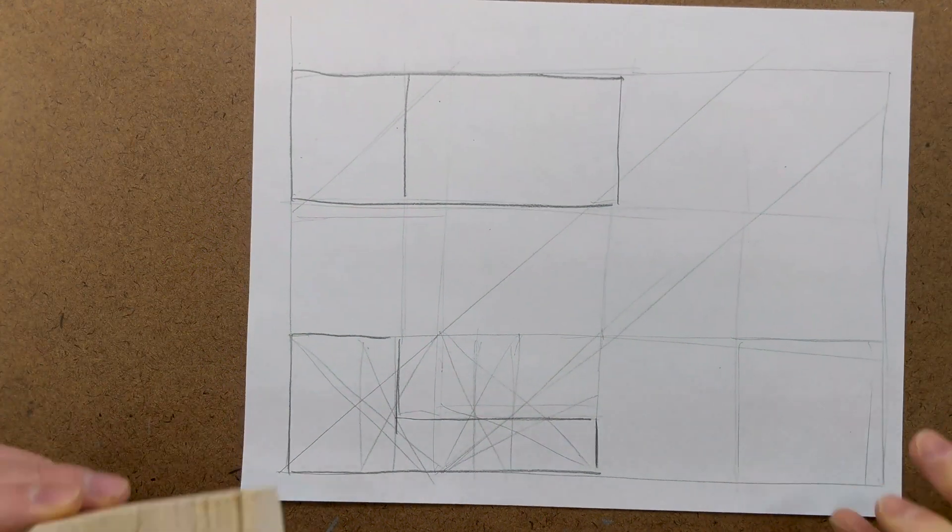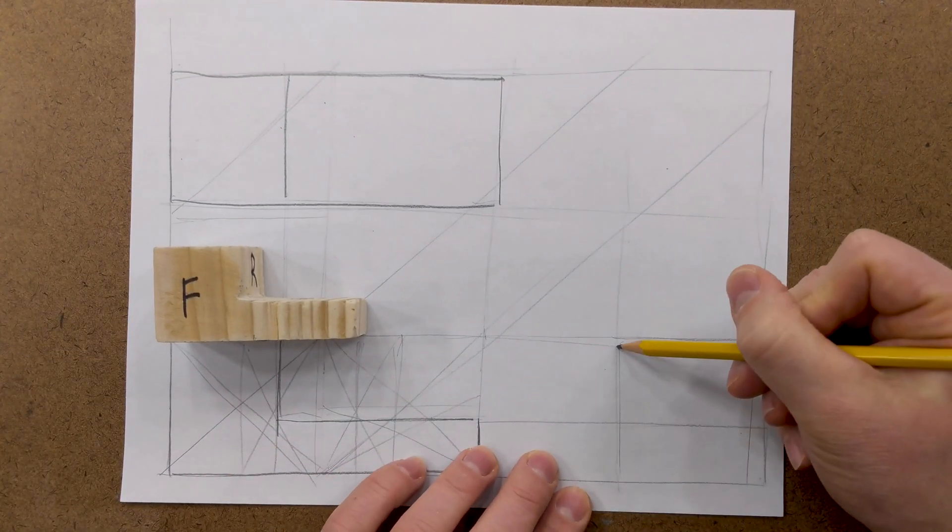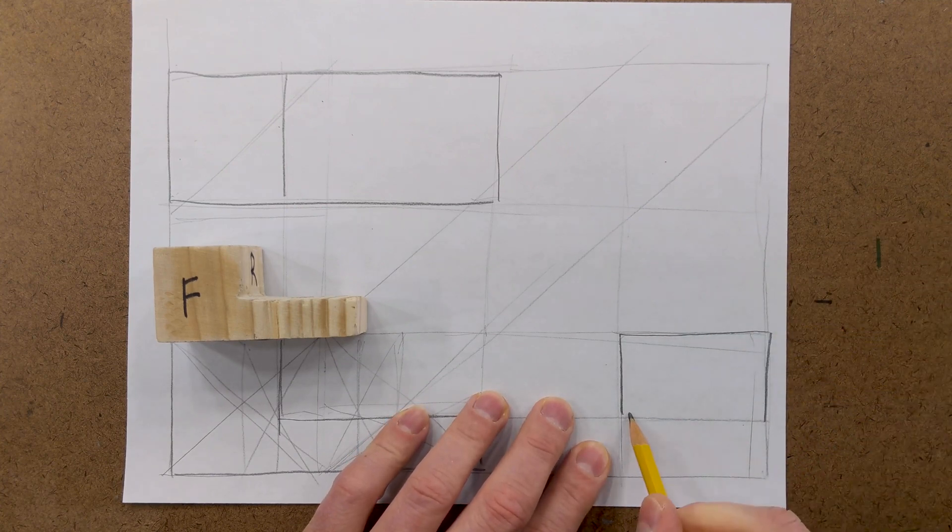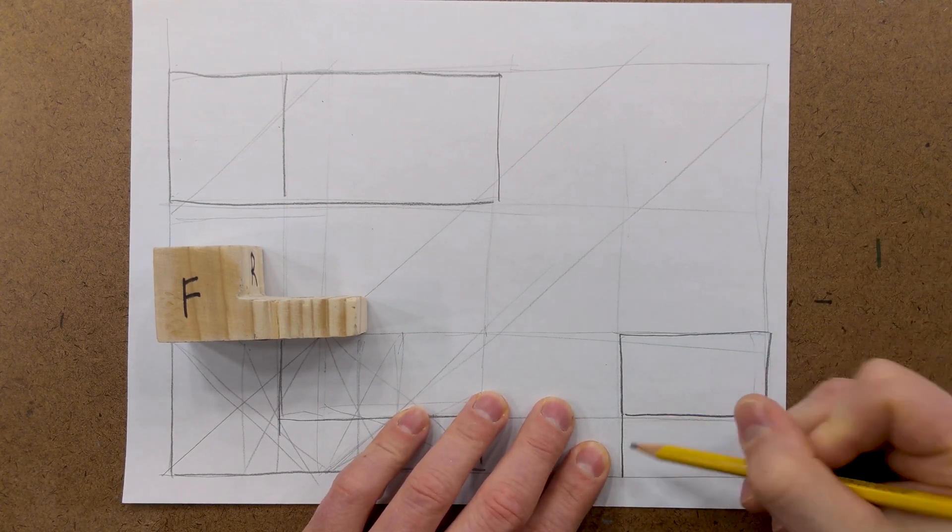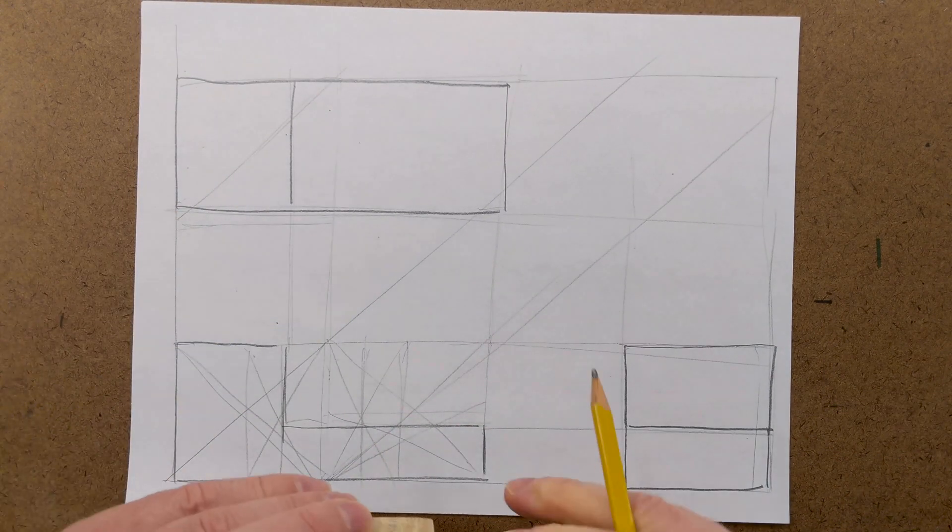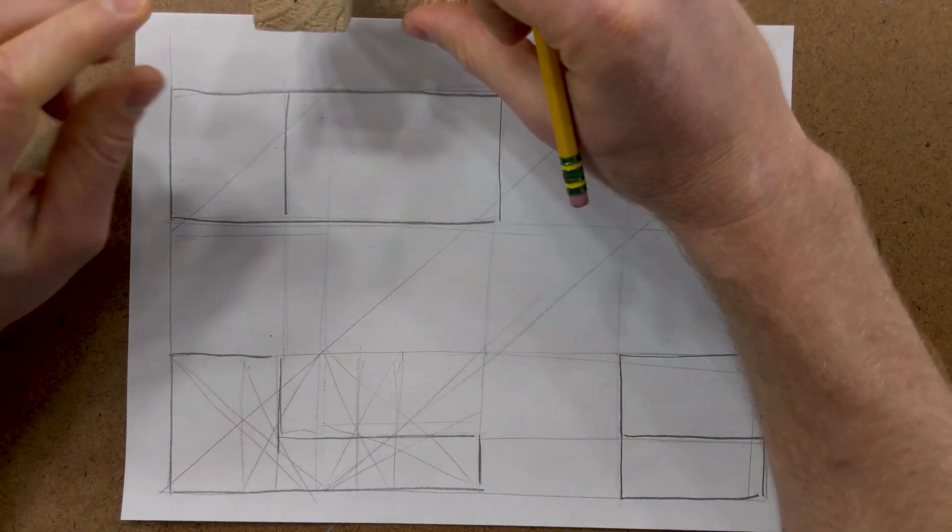We still need to add the hole, we'll worry about that in a second. Now we can project this over this way. So now let's go ahead and add the hole in there. As you can see, we're a little off on our proportions, but again, that's totally fine.